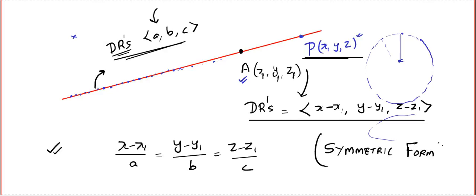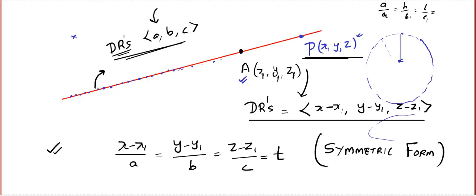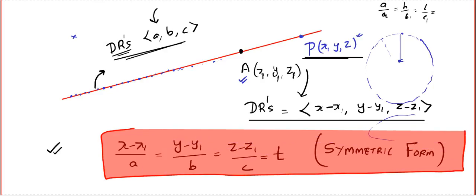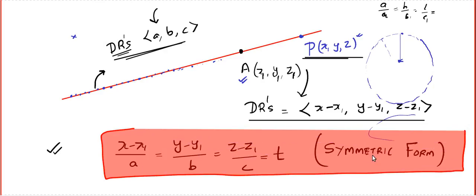This form has a name — it is called the symmetric form. From ratio and proportions, which you learned in high school, if you have A/A1 = B/B1 = C/C1, you can set each ratio equal to some constant. I am going to call that constant t. You can use s, lambda, or mu — it is up to you. This is the Cartesian equation of a line, also called the symmetric form of the line.